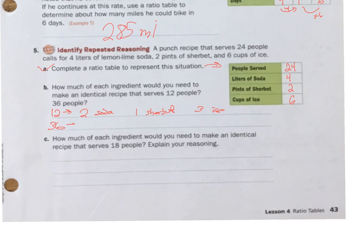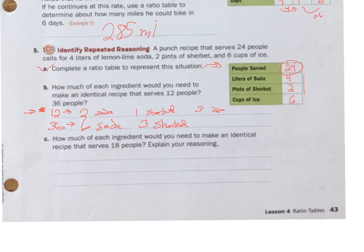For 36 people: 36 is 24 plus 12, and I already did 12. So I add the 24-person recipe plus the 12-person recipe: four plus two is six liters of soda, two plus one is three pints of sherbet, and six plus three is nine cups of ice.